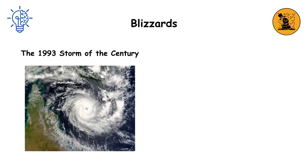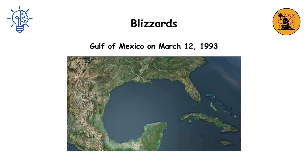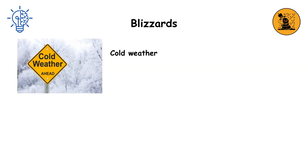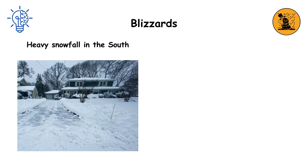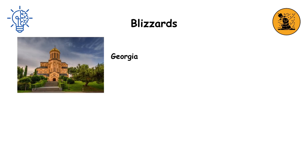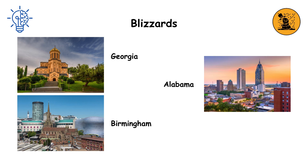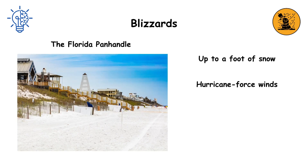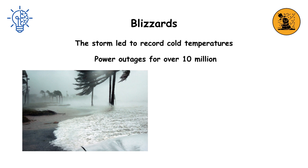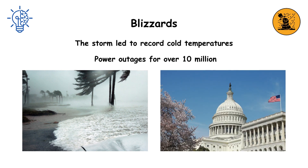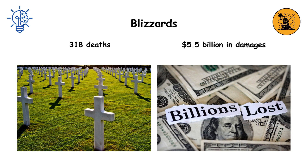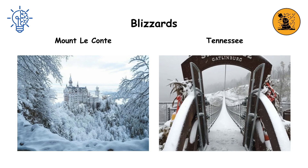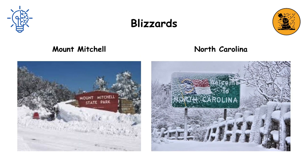The 1993 Storm of the Century, also known as the '93 Superstorm, formed over the Gulf of Mexico on March 12, 1993. It brought cold weather, heavy snow, high winds, and storm surges from Canada to Honduras, dissipating on March 15. The storm caused heavy snowfall in the south, with Union County, Georgia seeing 35 inches and Birmingham, Alabama getting 13 inches. The Florida Panhandle saw up to a foot of snow and hurricane-force winds, causing deadly storm surges and tornadoes. The storm led to record cold temperatures and power outages for over 10 million U.S. households, affecting 40% of the population. It resulted in 318 deaths and $5.5 billion in damages. The highest snowfall was 56 inches at Mount Leconte, Tennessee, and 50 inches at Mount Mitchell, North Carolina, with drifts up to 15 feet.